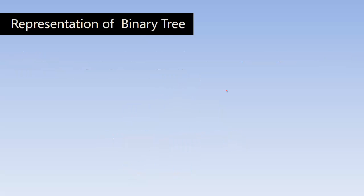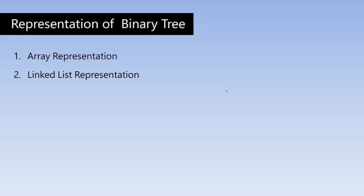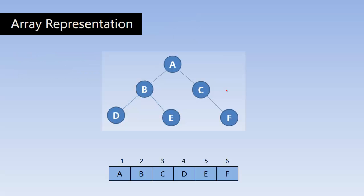Now, how can we represent a binary tree in C programming code or any code? There are two representations. One is the array form of representation, and another one is linked list representation. In the array representation, all the nodes can be stored in the array — A, B, C, D, E, F are stored inside the array as the elements.